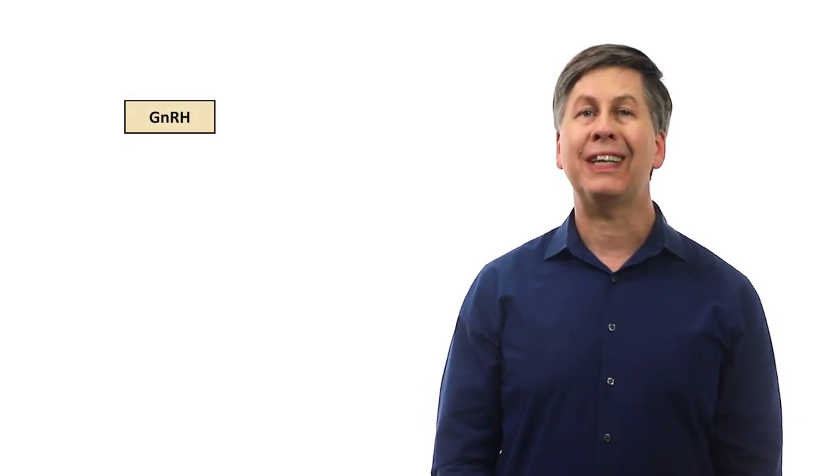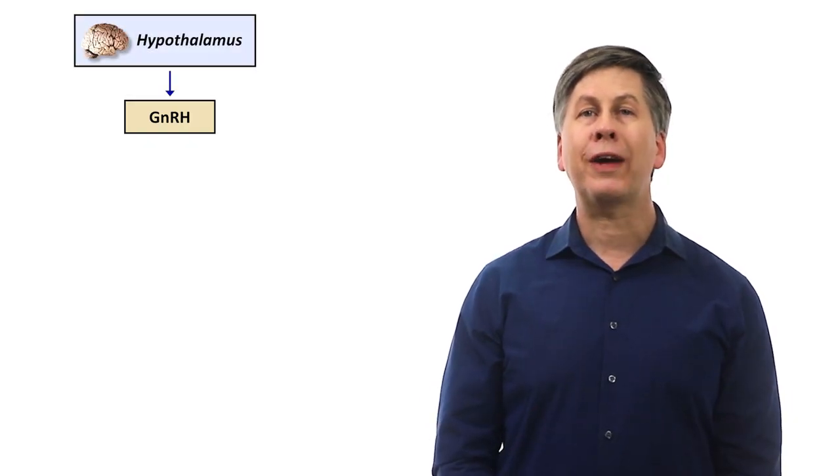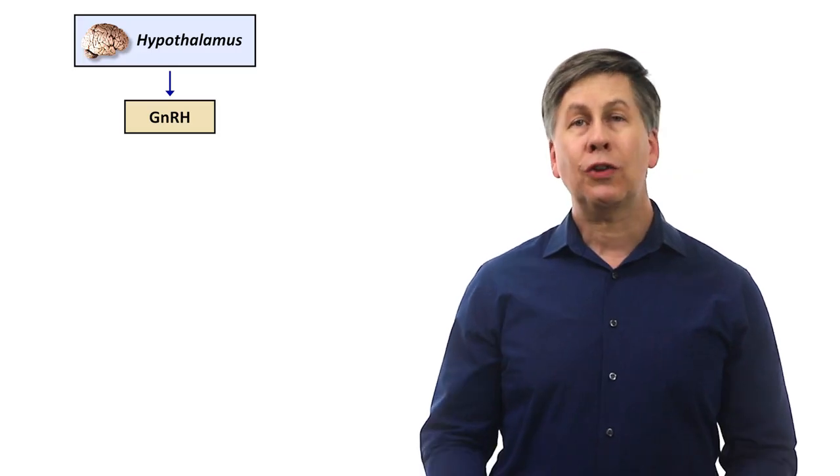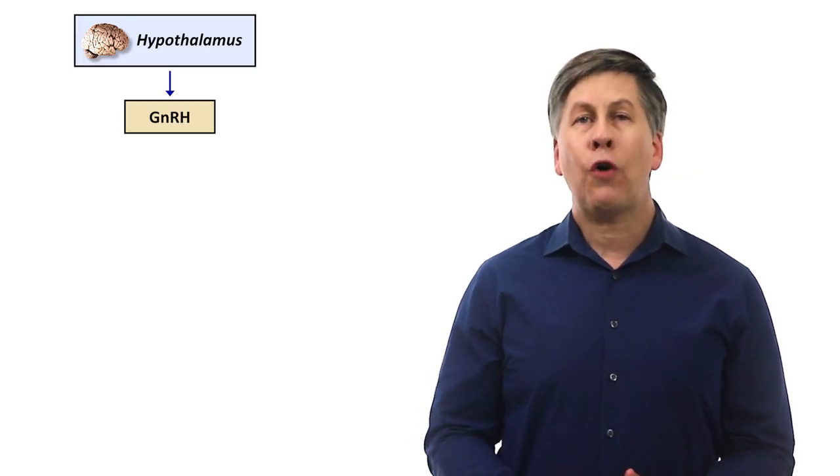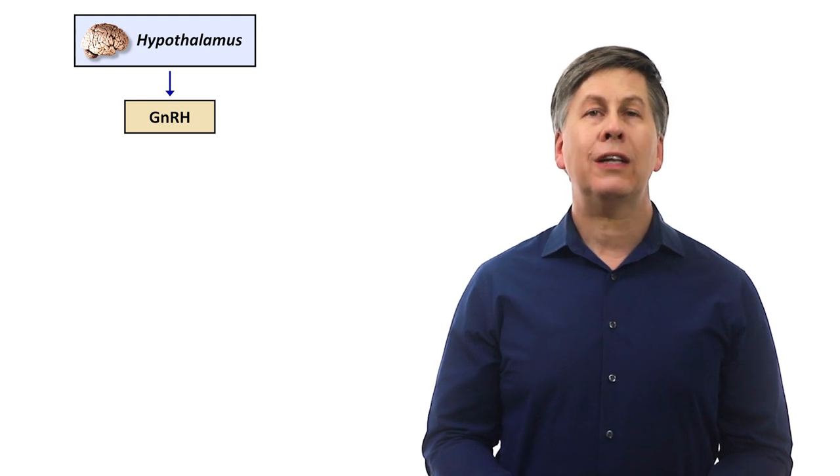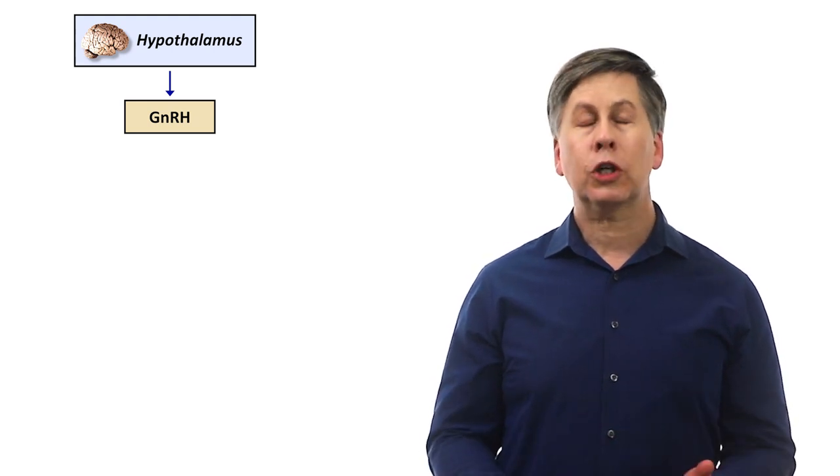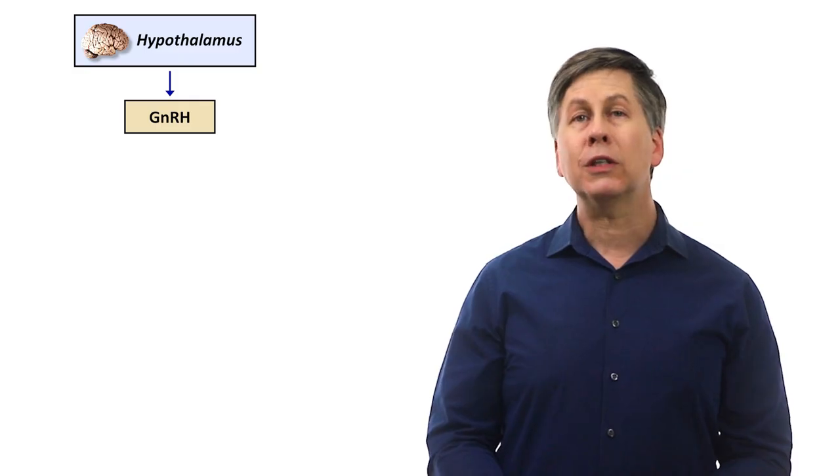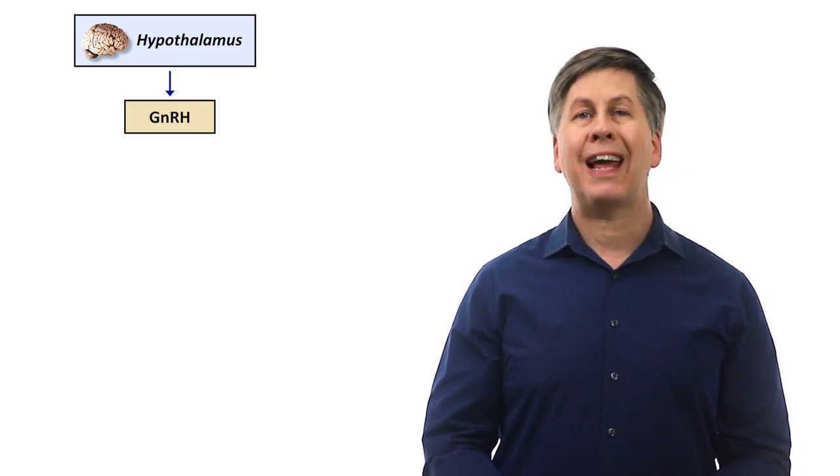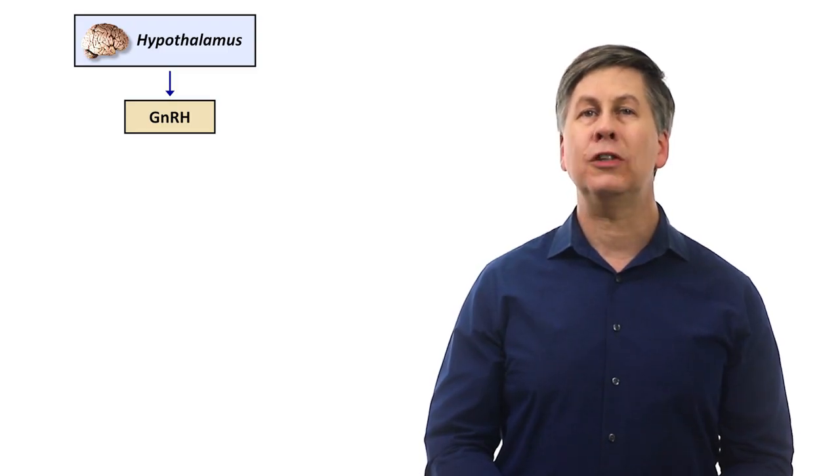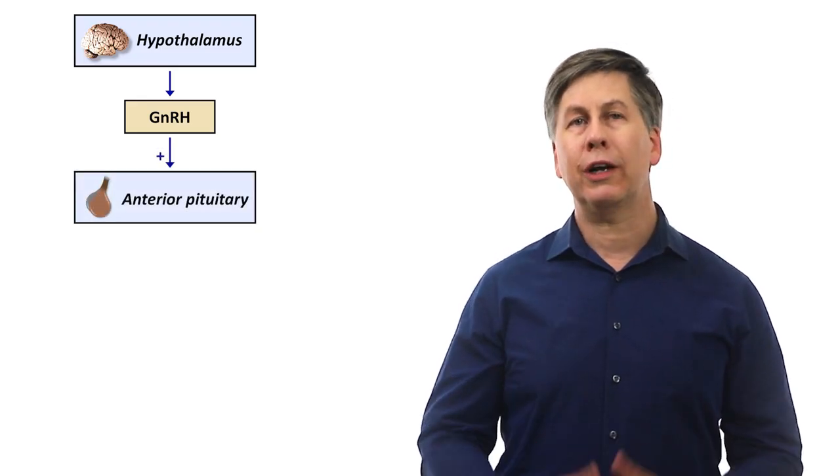The male reproductive system is regulated by a series of hormones that begins with one called GNRH, which stands for gonadotropin-releasing hormone. This is produced in the hypothalamus, a region of the brain located on its inferior aspect, which is involved in regulating the autonomic nervous system, and a variety of homeostatic systems related to sleep, body temperature, and our hormones.